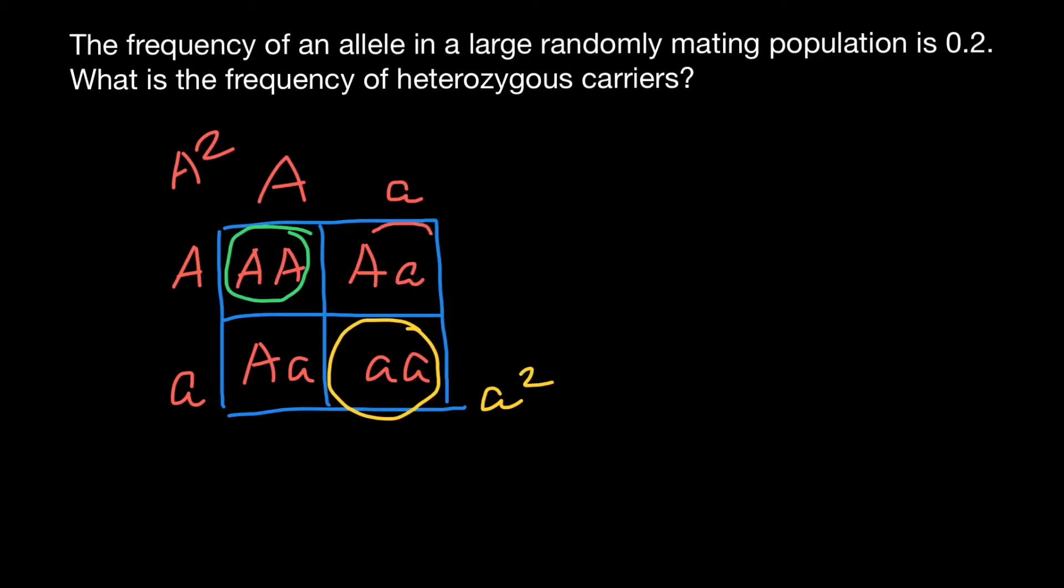And 50% are going to be heterozygous. So we can say that 2Aa.